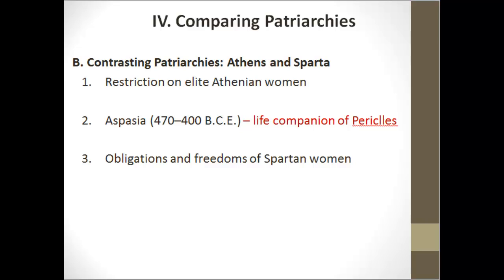One exception is the story of Aspasia. She was foreign-born and became not the wife but the lifelong companion of Pericles. They never married, but they lived together as husband and wife, and she was not confined to the home. Pericles is said to have treated her as an intellectual equal and asked her opinion on things — she's the rare exception in Athens.